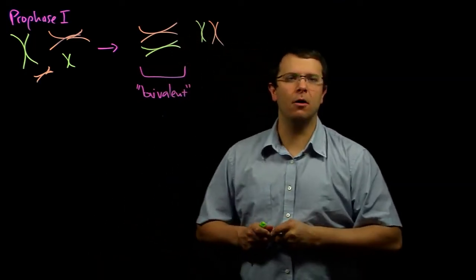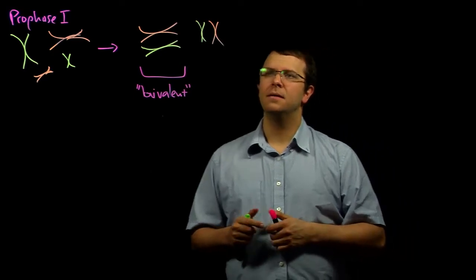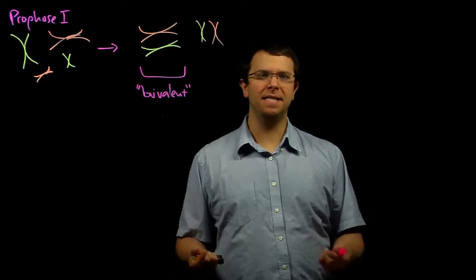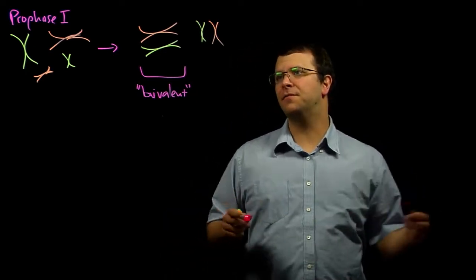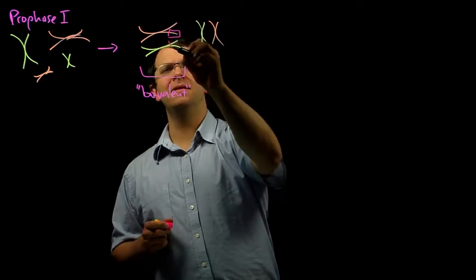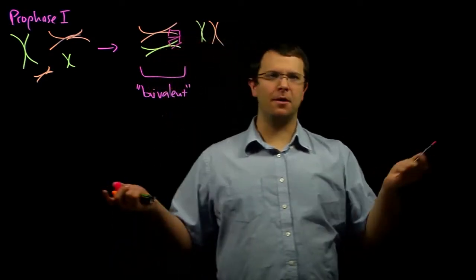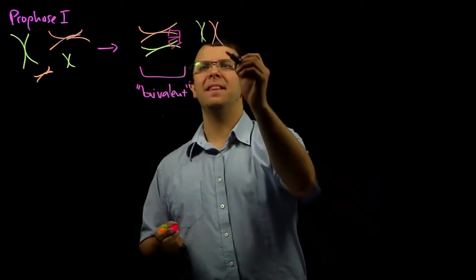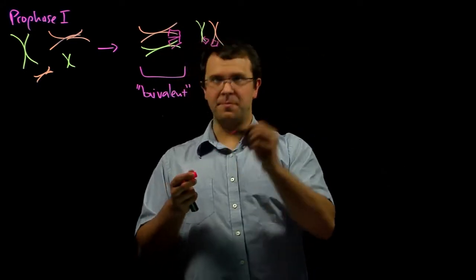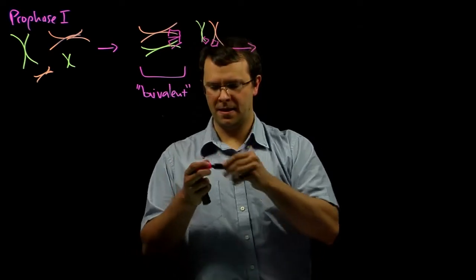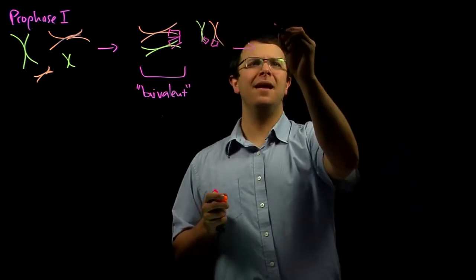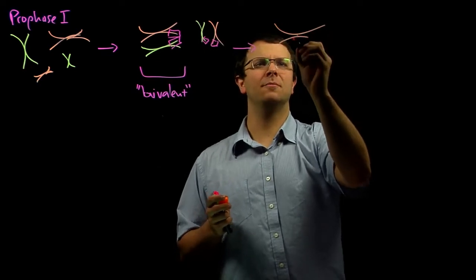And then something really remarkable happens. These pairs of homologous chromosomes swap pieces with each other. And so this piece of this chromosome and this piece of its homolog might switch. Let's say something similar happens with these two little pieces. And you end up with chromosomes that are kind of Frankenstein chromosomes almost.